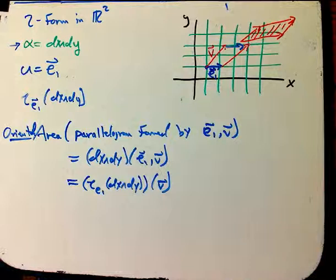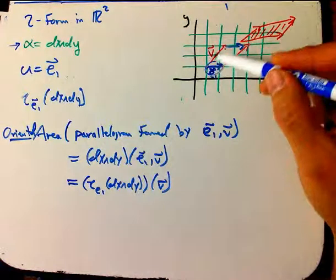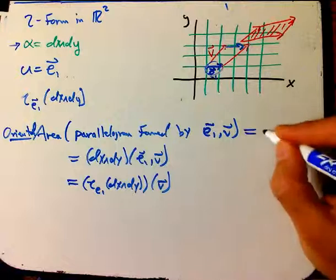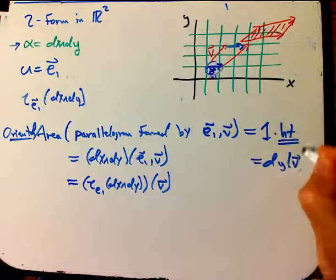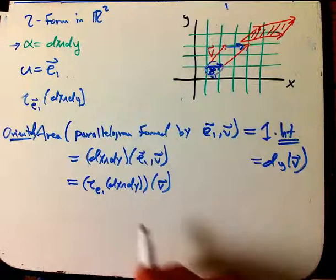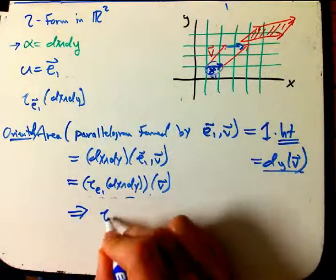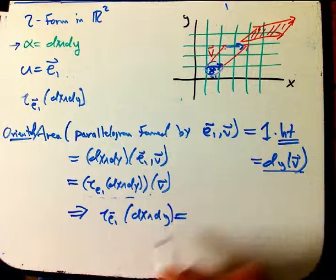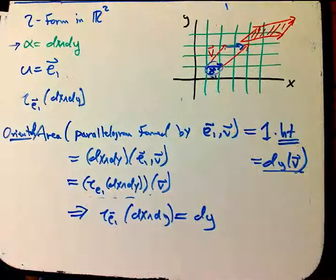Well, let's think about that. What's the base of this parallelogram here? It's one unit base. And then the height is just how many stacks of the y stacks does v go through. So this is just the base one times the height. Well, that's just dy acting on v. So the mystery form acting on v is supposed to be dy acting on v. So that means that I_E1 on dx wedge dy - the E1 and the dx kind of naturally pair together here and leaving the dy.